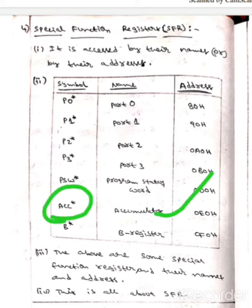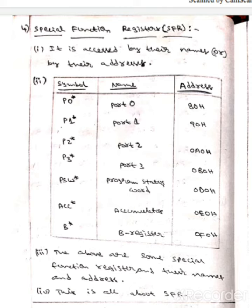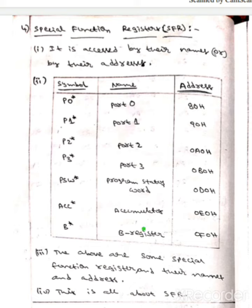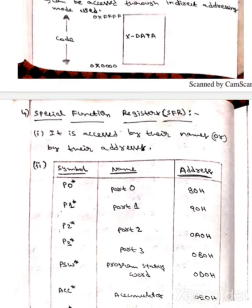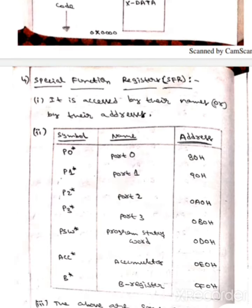The next one is ACC star. The name of it is Accumulator, and the address of it is 0E0H. The next one is B store. The name of B store is B register, and the address of B store is 0F0H. These are some special function registers. I hope you understood, guys. Thank you.